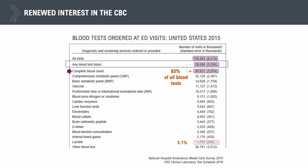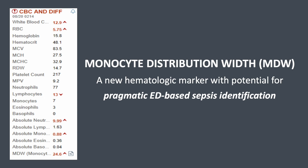MDW is easily accessible since it can be available as part of your CBC with differential. A complete blood count, or CBC, is the most frequent blood test ordered during an ED visit — 85% of all blood tests ordered in the ED is a CBC. MDW will simply show up in your routine CBC differential. As you can see here, MDW is within the differential at 24.6.